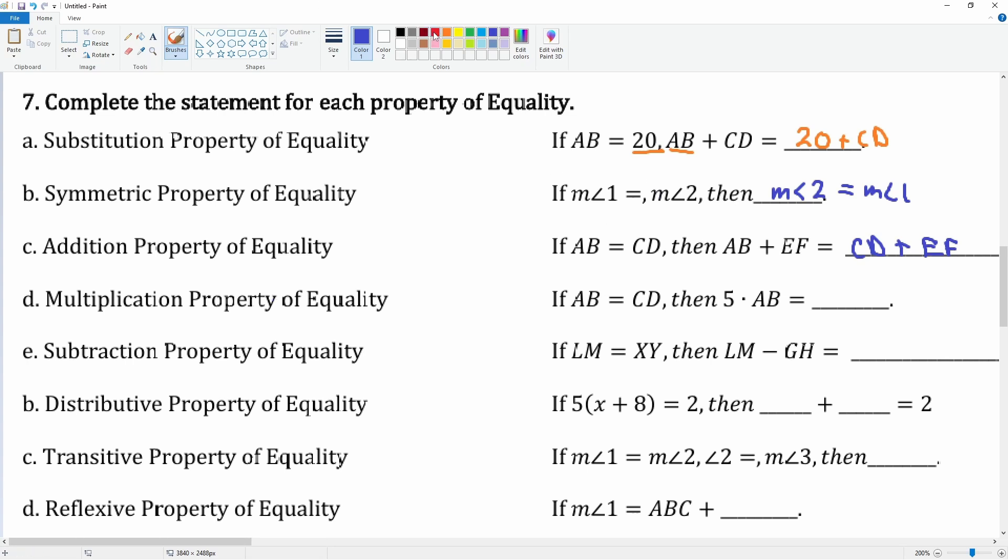Next, the subtraction property. Here you notice that you're subtracting GH from LM, therefore XY is also going to be minus GH because you have to subtract from both sides.